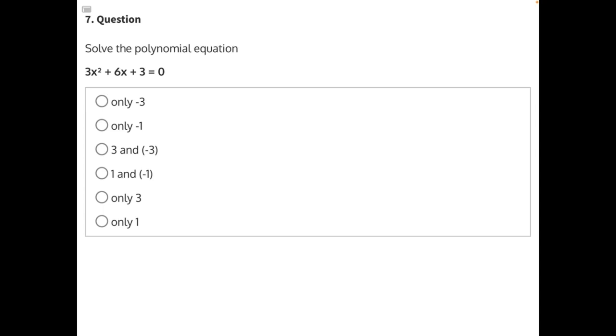Solve the polynomial equation. To solve a polynomial equation, the best thing to do is to factor it. If we can get this polynomial equation represented as two binomials, we can set each of those binomials equal to 0 and solve for x.